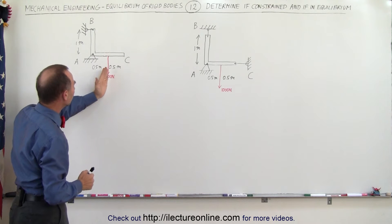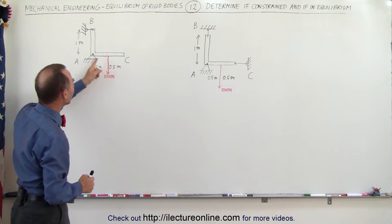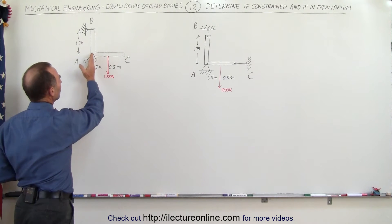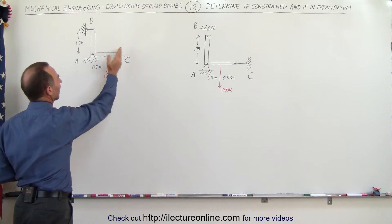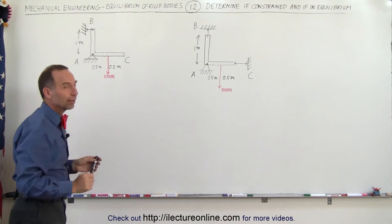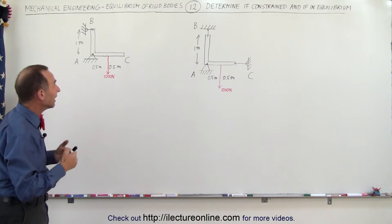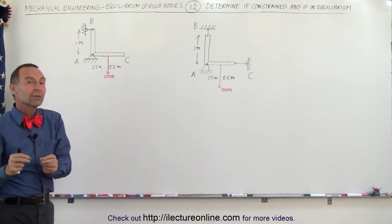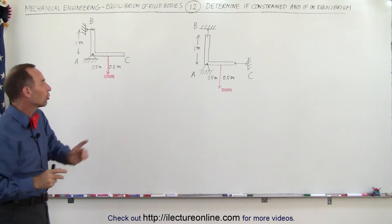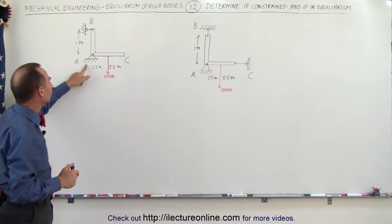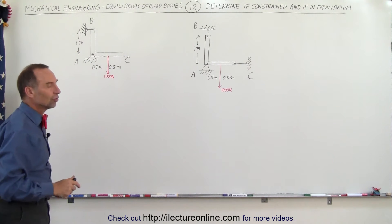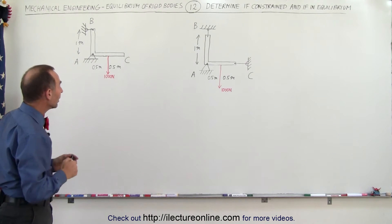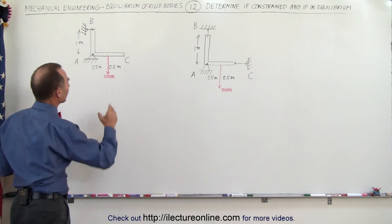There's a force of a thousand newtons pulling down on this structure at the halfway point between where it's supported and the very end. The question is: is this constrained, is there equilibrium, and can we determine the forces at A and B?